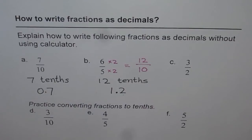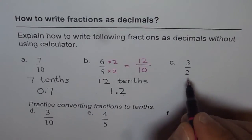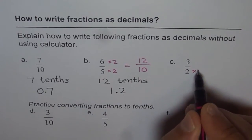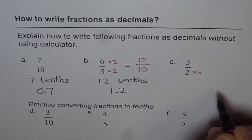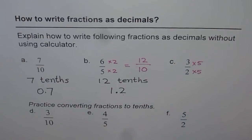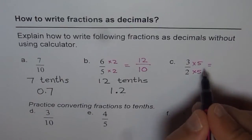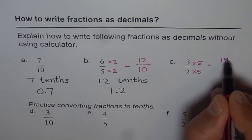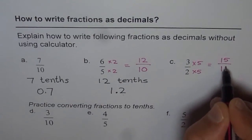Now in this case, which is 3 over 2, let us first try to write 3 over 2 as tenths. 2 times what is 10? 2 times 5 is 10, right? And how about 3? We have to multiply that also by 5. If we do, 3 times 5 is 15 and 2 times 5 is 10.